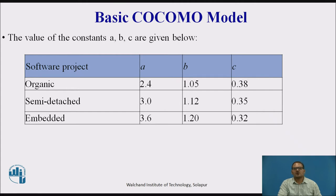The values of the constants a, b, and c are fixed values that we need to consider for each project type: organic, semi-detached, and embedded. These are constant values given in the COCOMO model table.